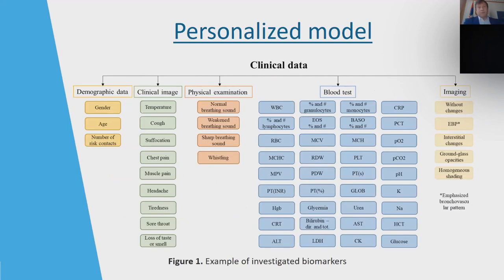What kind of data are there? We have demographics data — gender, age, number of risk contacts — clinical image data from X-ray and CT scan. CT scan is more detailed. We collect temperature, chest pain, muscle pain, headache, tiredness, sore throat, loss of taste or smell, physical examination including breathing sounds and whistling. And of course the big analysis of blood tests: red blood cells, PDV, PDW, PLT, PT, GLOBE, et cetera. This is very important to try to collect what kind of features can be used as dominant for this kind of patient, including patient history and also genetic data.